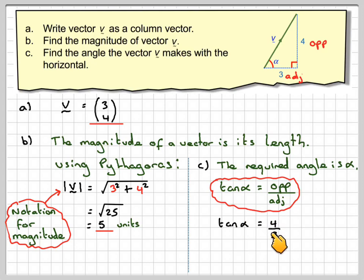So, tan alpha is going to be 4 over 3, 4 over 3, and therefore alpha will be the tan to the minus 1 of 4 over 3. We can do this on our calculator, make sure our calculator is in degree mode, and that's going to give an answer of 53.1 degrees.